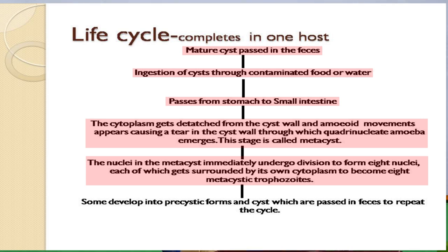The metacyst undergoes division to form eight nuclei. Each nucleus then acquires individual cytoplasm. This stage is called the metacystic trophozoite. The metacystic trophozoite is the infective stage, which goes on to infect the tissues of the colon, causing necrosis and bleeding during defecation.